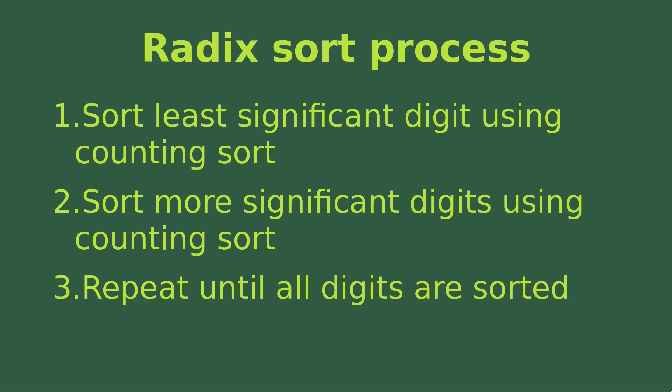Hello everybody, welcome to the algorithm course. In this video, I'm going to explain the radix sort process. First, we need to sort the least significant digit using the counting sort approach. Then we try to sort the more significant digits using the counting sort approach, and we simply repeat the sorting process for even more significant digits until all the digits are sorted.